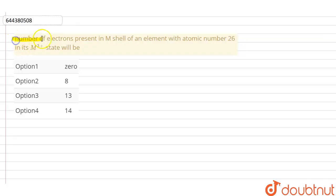The question is: number of electrons present in M shell of an element with atomic number 26 in its M3+ state will be 0, 8, 13 or 14.